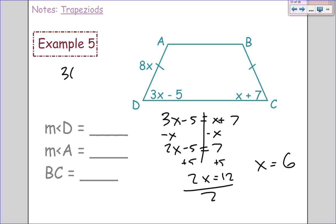So angle D will be 3 times 6 minus 5, which is 18 minus 5, which is 13 for angle D. Angle A and angle D are supplementary, so 180 minus 13 gives you 167. And finally, BC will be the same as AD, so 8 times 6 is going to be 48, so that will also be 48.